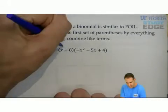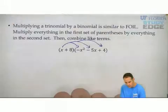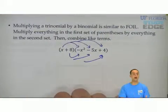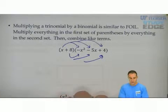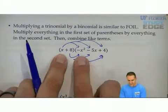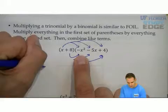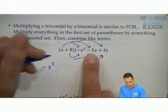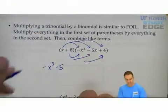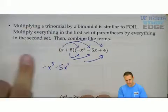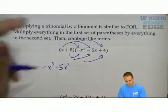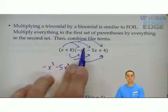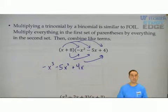Use the arrows. It's x times all three of these terms, and then 8 times all three of these terms to really help you match everything up. So here we go. I have x times negative x squared would be a negative x cubed. x times negative 5x would be negative 5x squared. x times 4 is plus 4x. So I multiplied x times each term in the other set of parentheses.